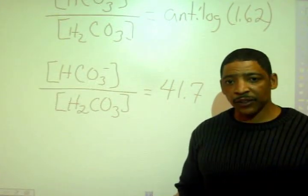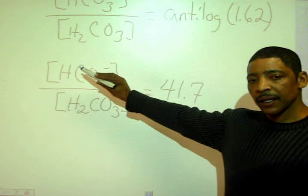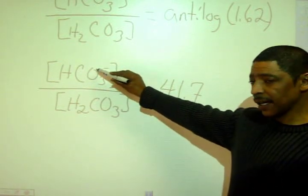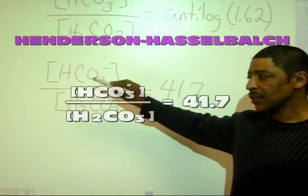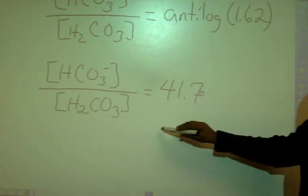And our final answer becomes, ratio of anion to acid or ratio of bicarbonate ion to carbonic acid should be 41.7 to 1.